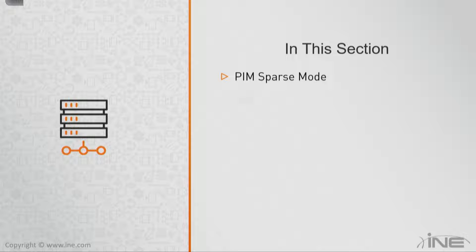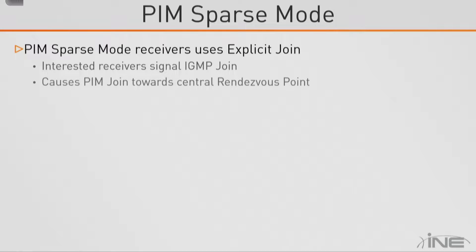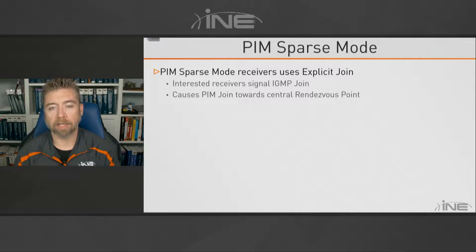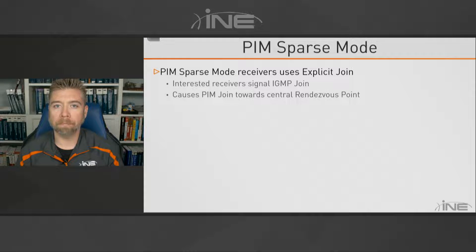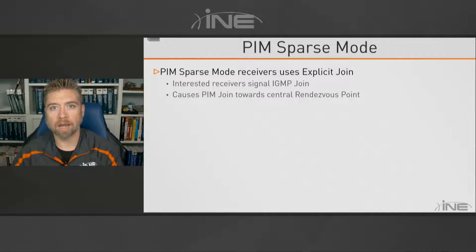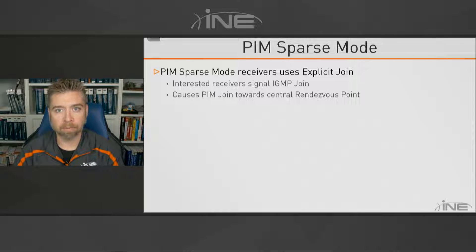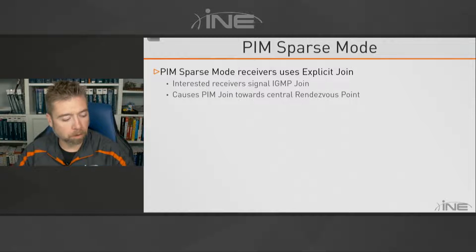The three portions are: PIM sparse mode, PIM bidirectional (PIM bidir), and PIM source specific multicast. PIM sparse mode uses an explicit join feature for receivers to receive traffic from particular senders. In PIM dense mode, traffic was blindly sent to all ends of the network and anyone who didn't want it would prune it back — simple but inefficient. PIM sparse mode was designed to solve this.